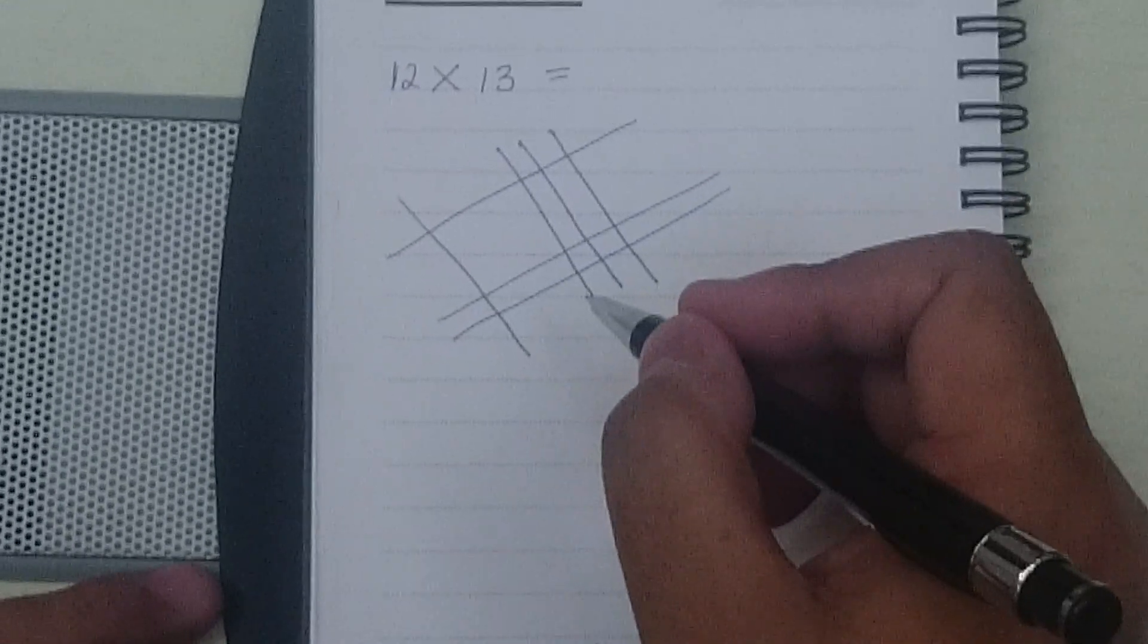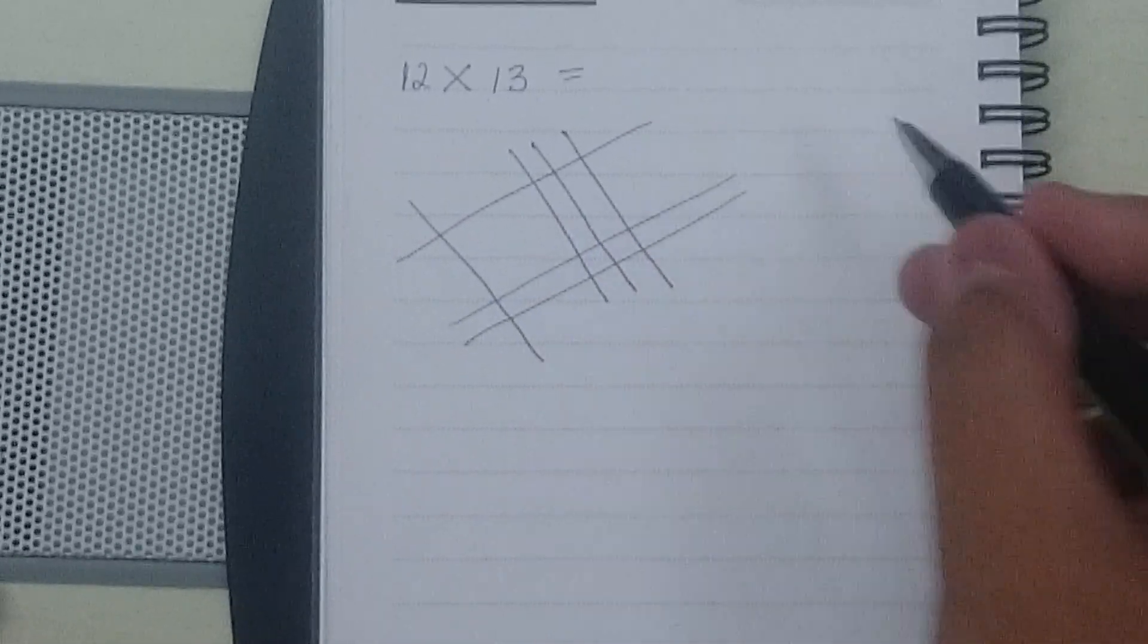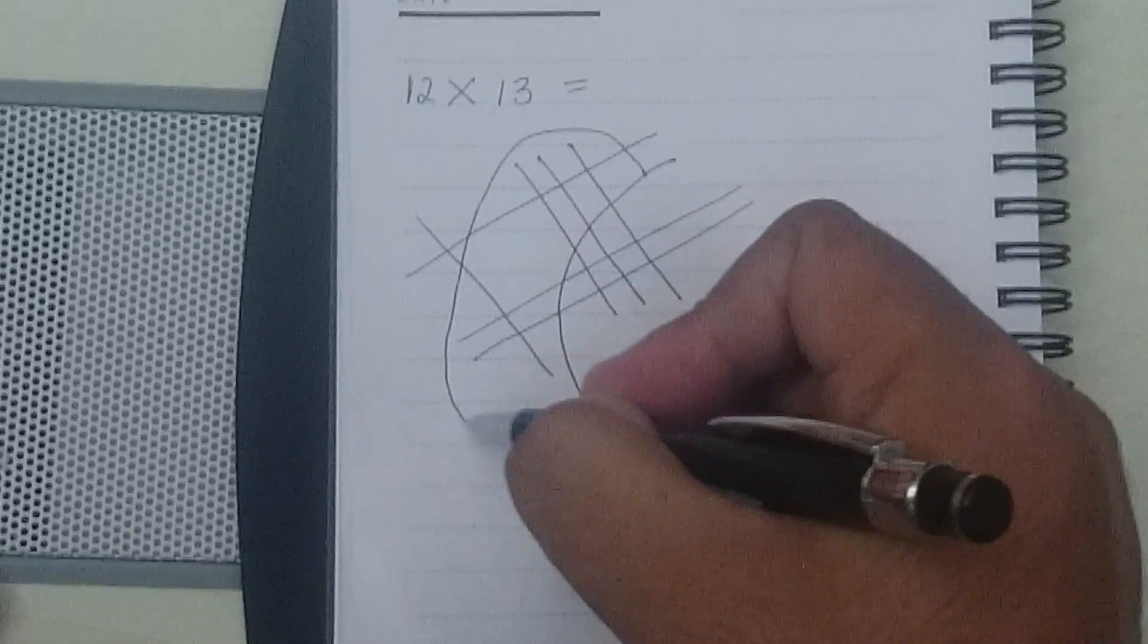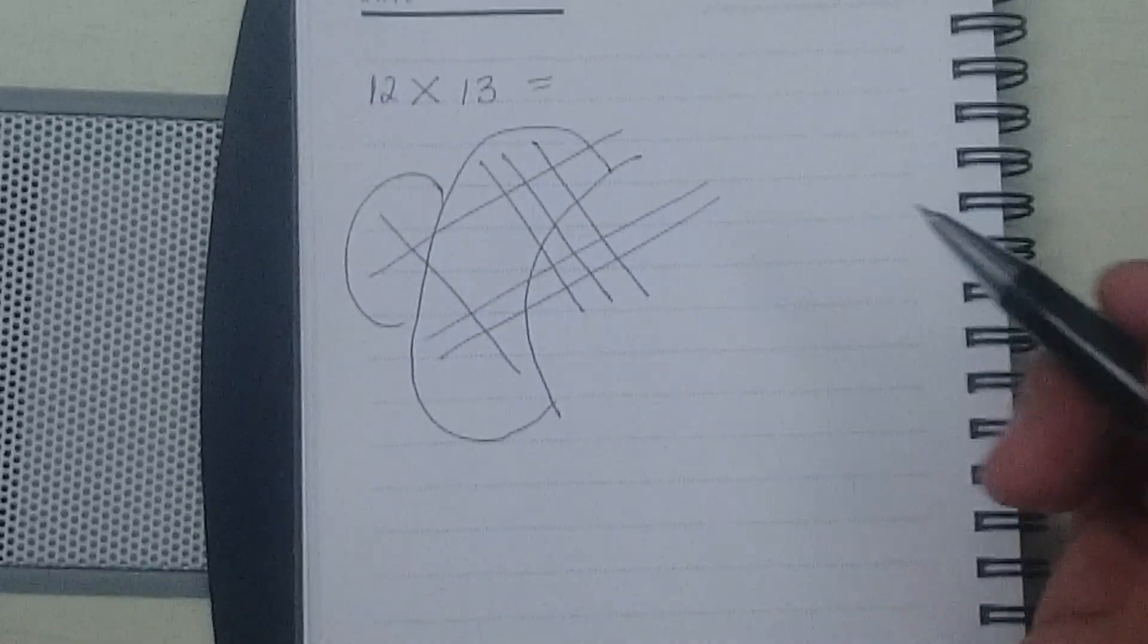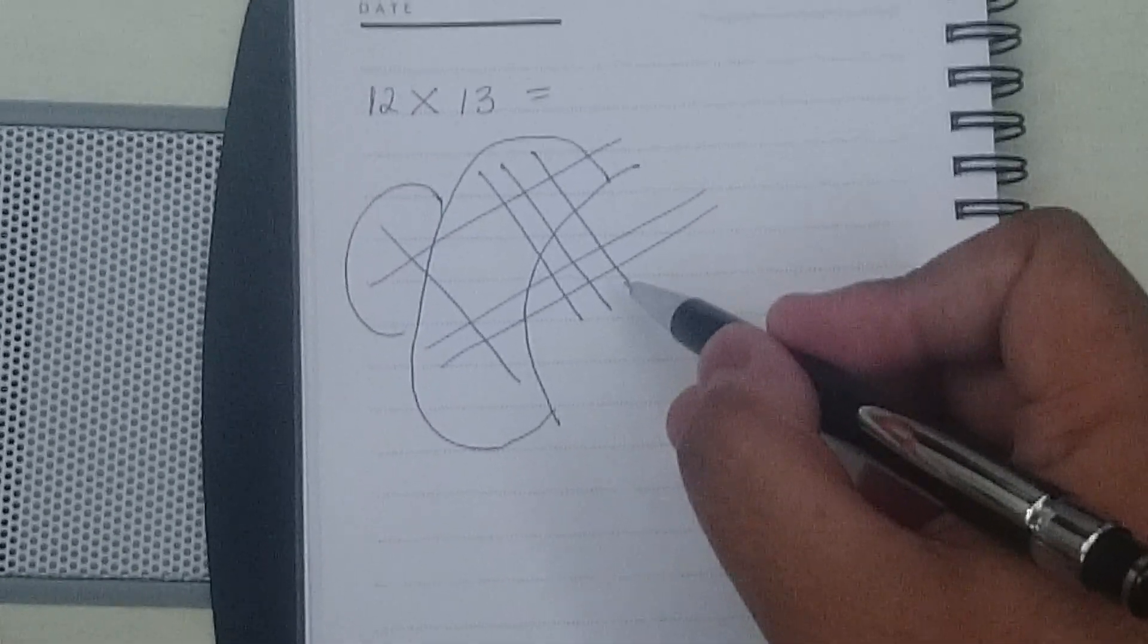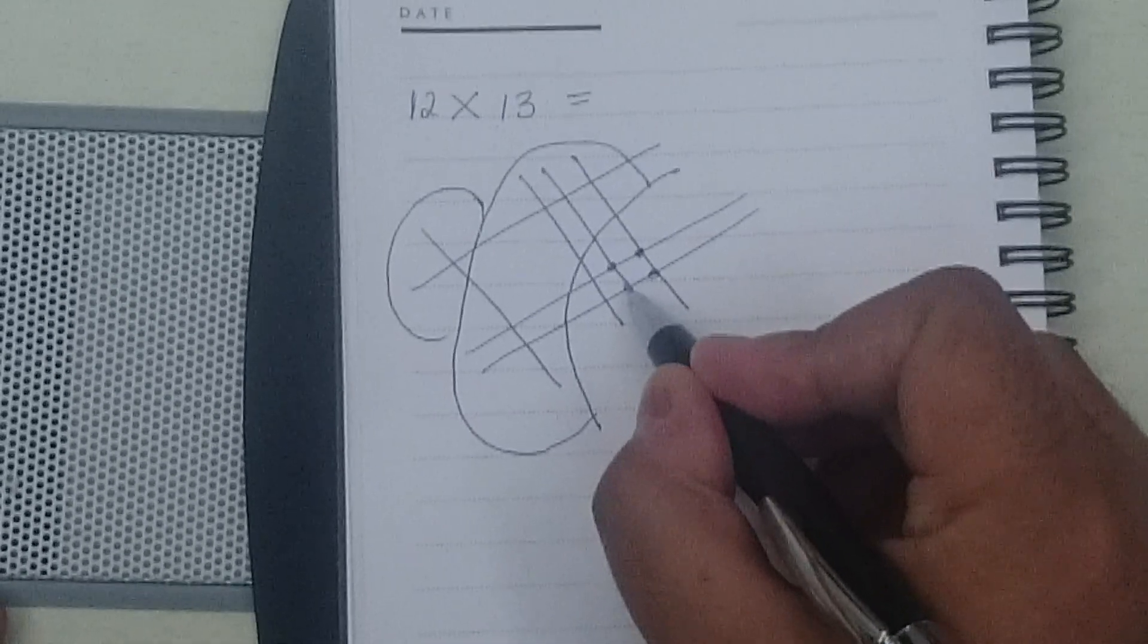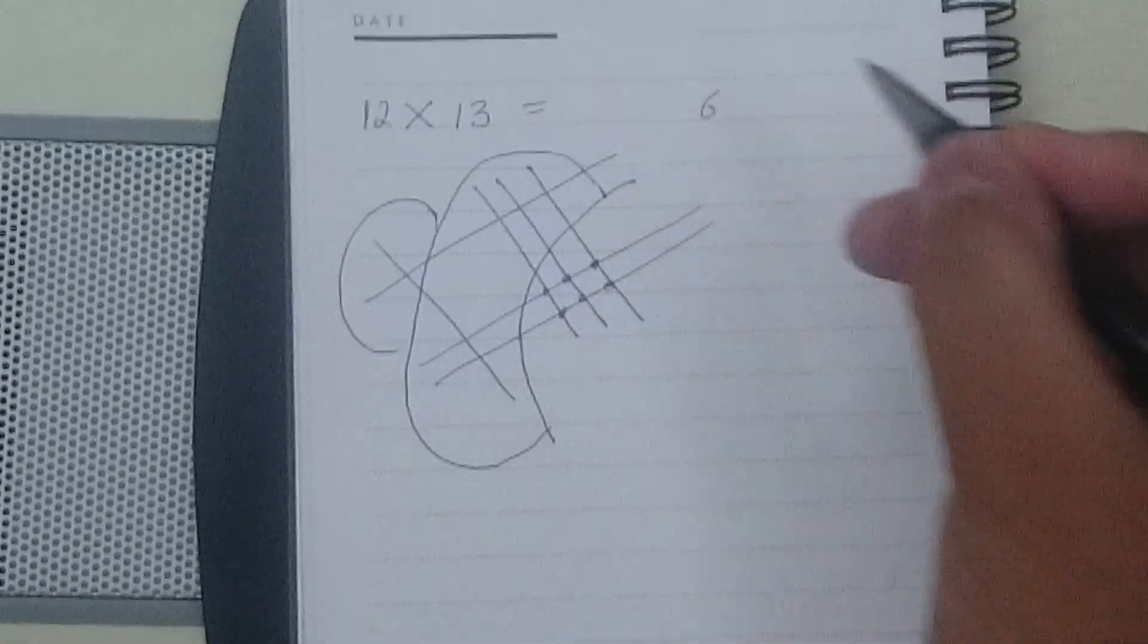Now our multiplication is done. All we need to do is divide this diagram into three sections. So one section is this, second section is this and third section is this. Now let us see how the result will come out. In the first section, we have to count the number of intersections of lines. So 1, 2, 3, 4, 5, 6. So the first digit becomes 6.